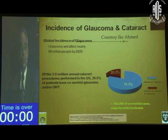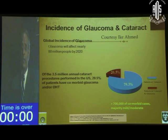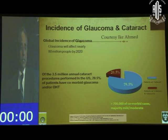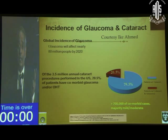Canaloplasty is a bit more involved but is not associated with any bleb. You can achieve a surgical result comparable to trabeculectomy in the vast majority of patients, but without the associated complications. In hundreds of canaloplasty procedures performed over many years, I have never had a patient with choroidal effusions, suprachoroidal hemorrhage, hypotony maculopathy, or bleb-related endophthalmitis.